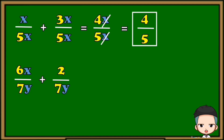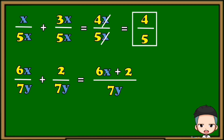Another example: 6x over 7y plus 2 over 7y. The denominators are the same, so we're just going to copy the denominator 7y and add the numerators. Since 6x and 2 are not similar terms, we cannot combine them, so all we have to do is write them together. 6x plus 2. Our final answer is 6x plus 2, all over 7y.